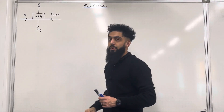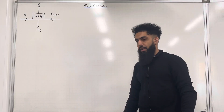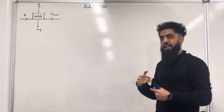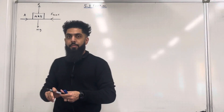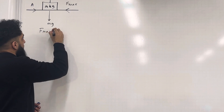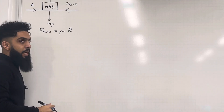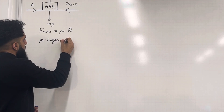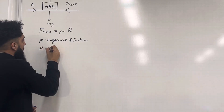This frictional force is called F max. F max is the maximum friction that is present. As the applied force increases, the frictional force also increases but then reaches its maximum, called F max. The formula for F max is: F max equals mu, the coefficient of friction, multiplied by the normal reaction R.